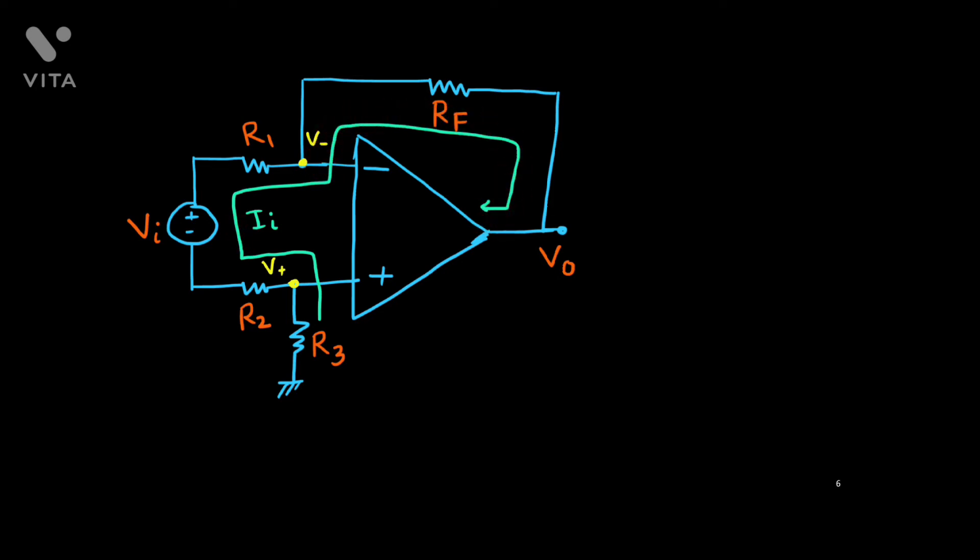And again, you see, the circuit is having negative feedback through this one. This Rf is connected from this output voltage to the inverting terminal. Thus, it is a negative feedback. And because of negative feedback, output is finite.